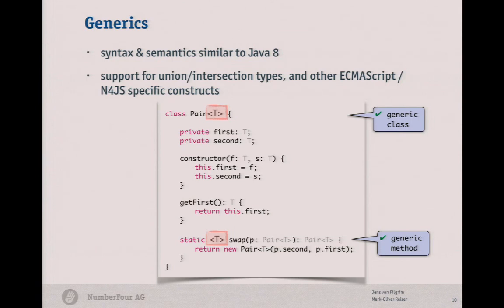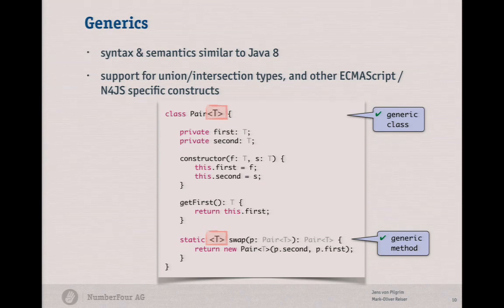Generics are another very powerful thing when it comes to a type system. N4JS has really the same syntax and same semantics as Java 8 generics — not Java 7, it's really Java 8. We even use the same algorithms internally to infer things for type variables. It's a bit more powerful because we had to extend it to support union types, intersection types, and other things introduced in N4JS.